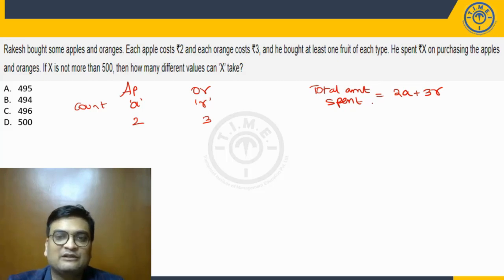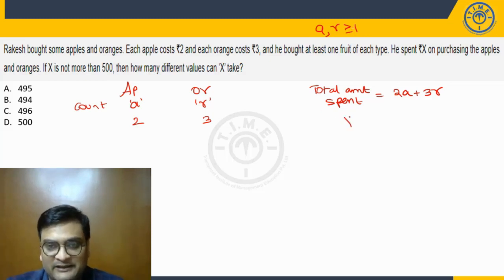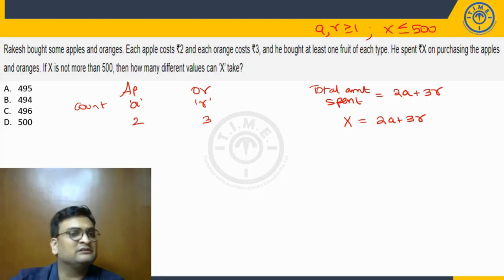So that means the total amount spent by Rakesh is going to be 2A plus 3R. And he bought at least one fruit of each type, so that means A and R are greater than or equal to 1. He spent X rupees on purchasing the apples and oranges, so this total amount spent is nothing but X. If X is not more than 500, that would mean X is less than or equal to 500. Then how many different values can X take?